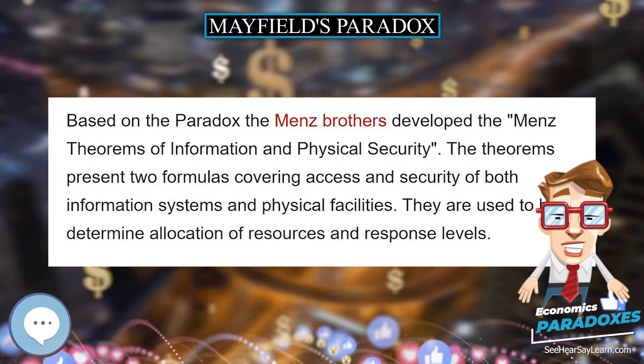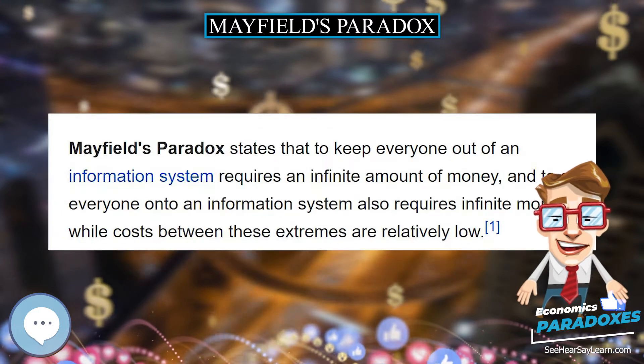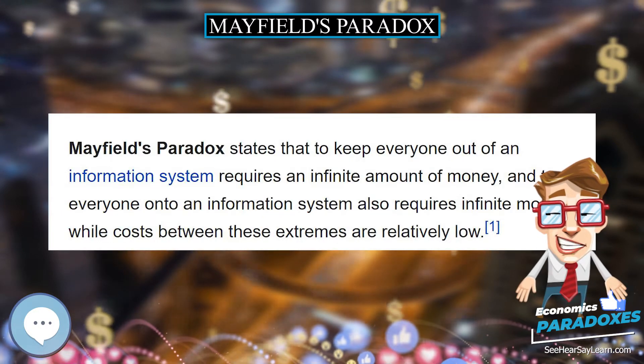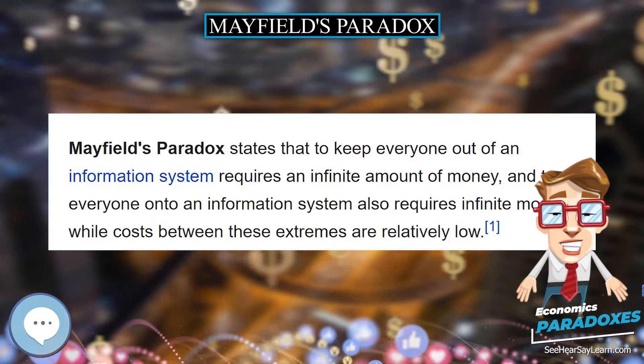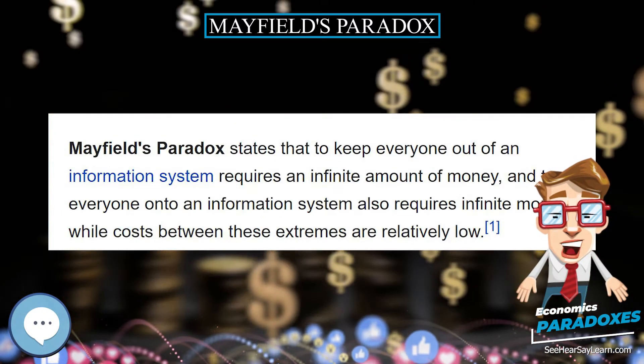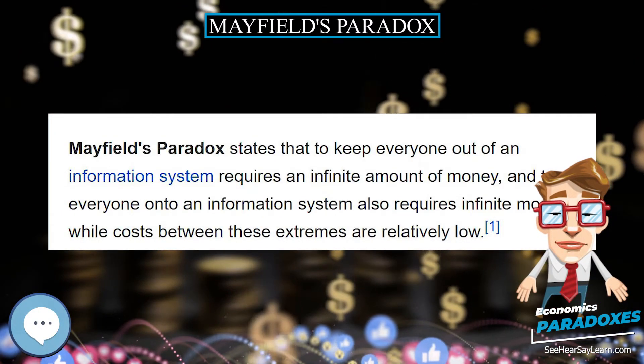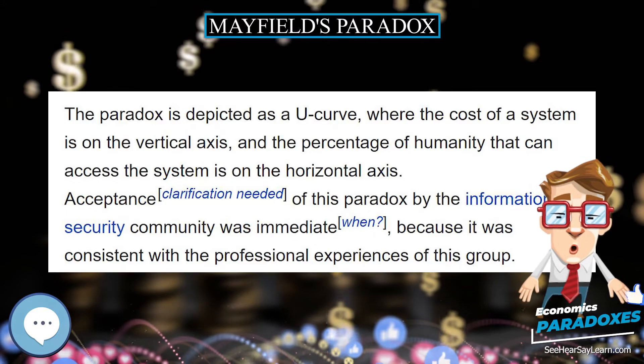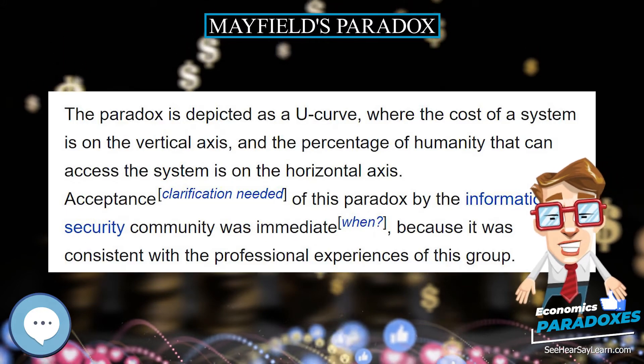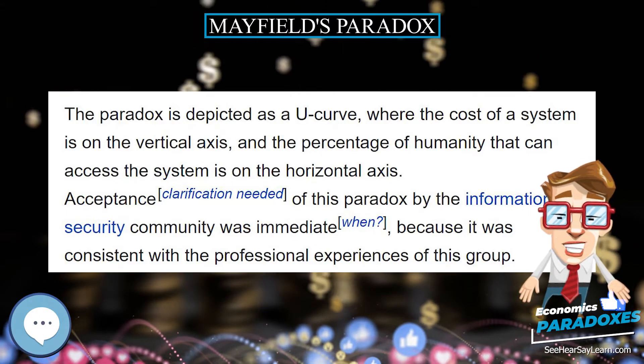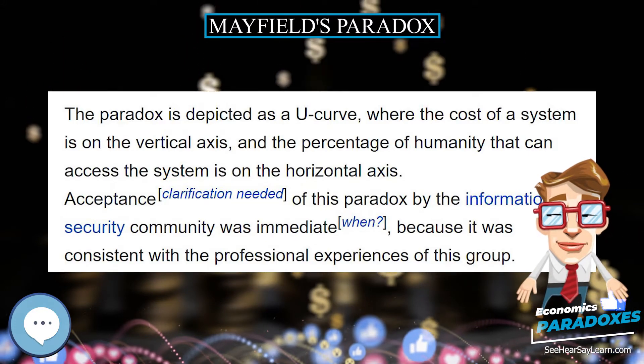The paradox is depicted as a U-curve, where the cost of a system is on the vertical axis, and the percentage of humanity that can access the system is on the horizontal axis.